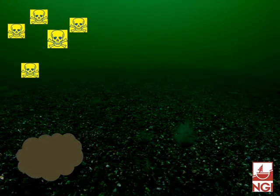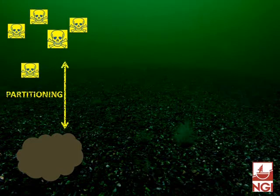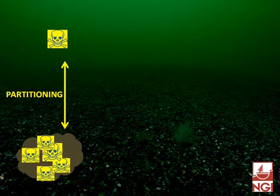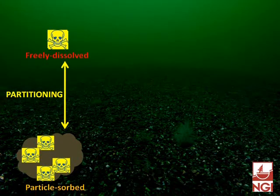What are all those contaminant molecules doing? We have to consider the other things that are down there. For one thing, there are a lot of particles or sediments. These sediments can be in the water column floating, but mostly they're lying on the seabed. The contaminants undergo a process called partitioning or sorption. Some contaminants will stick or sorb to the sediments; the rest will remain freely dissolved in the water.